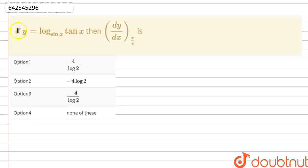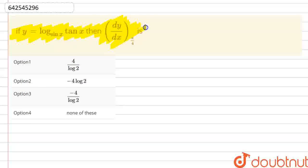Hello friends, the question is: if y is equal to log 10x with base sine x, then we need to find the value of dy/dx at π/4 and choose one correct option.